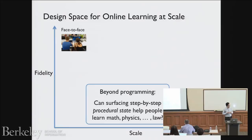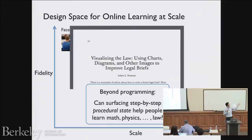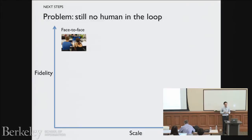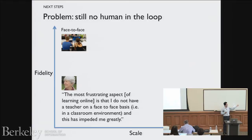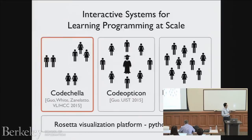Thinking beyond programming — can surfacing procedural state help people learn other topics? Math and physics come to mind: derivations, proofs, geometry, physical simulations. But the problem is I still haven't fulfilled the promise of having a human in the loop. It's great to have these visualizations, but people like Mrs. Hamilton still need to understand them herself — it would be great to have people actually help her. Her original frustration with the lack of human contact is still not addressed.